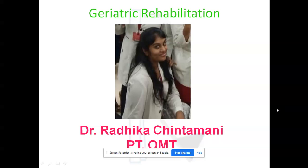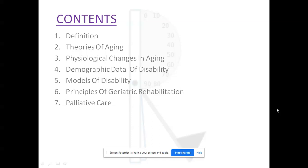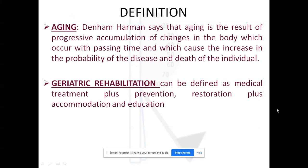Good morning everyone. Let's start with today's topic: geriatric rehabilitation. The contents will be definition, theories of aging, physiological changes in aging, demographic data on disability, and models of disability. We'll cover theories of aging, physiological changes, and demographic data today; the remaining three points will be addressed in the next class.